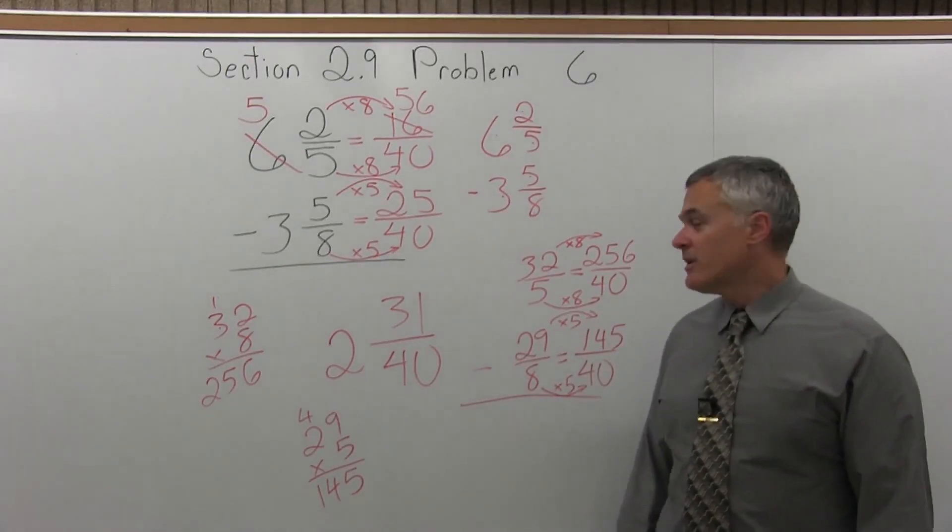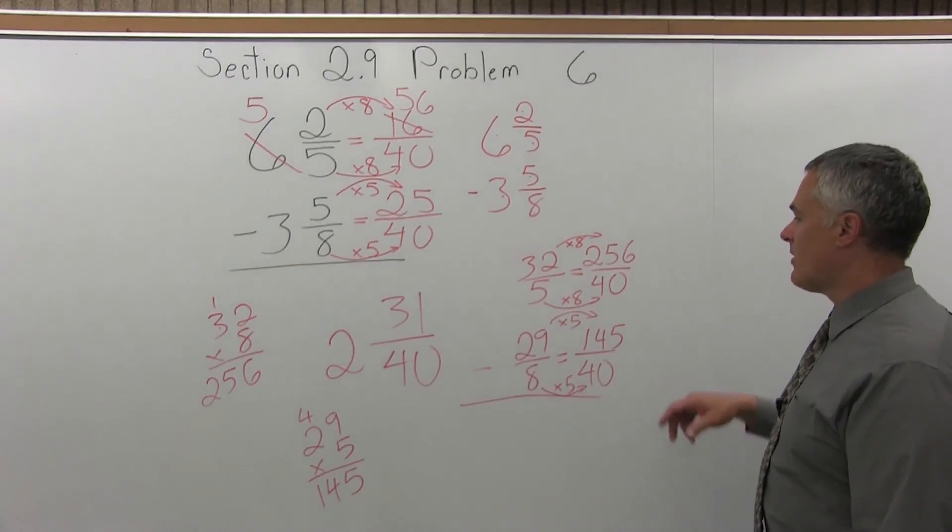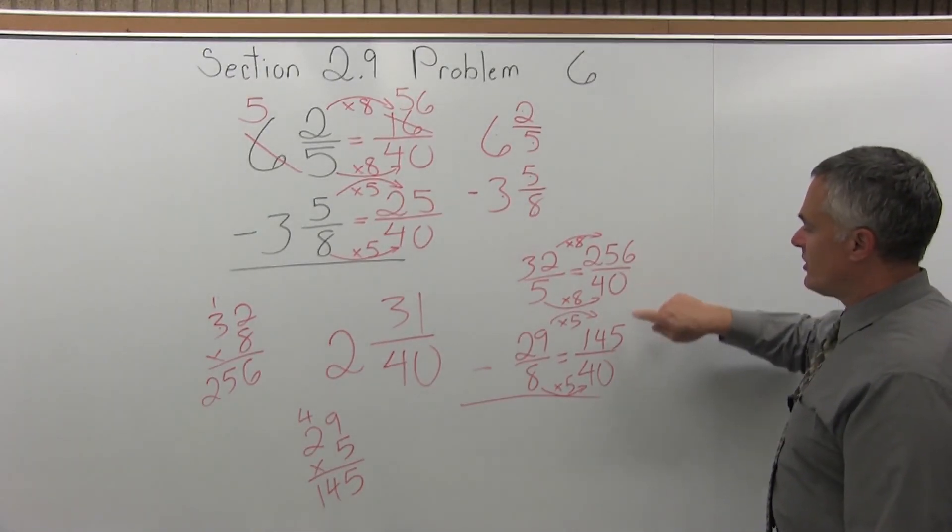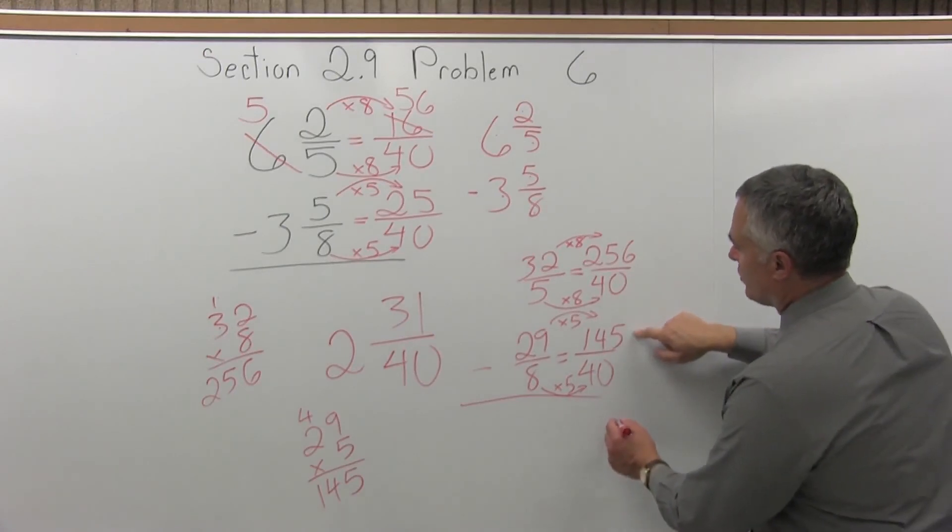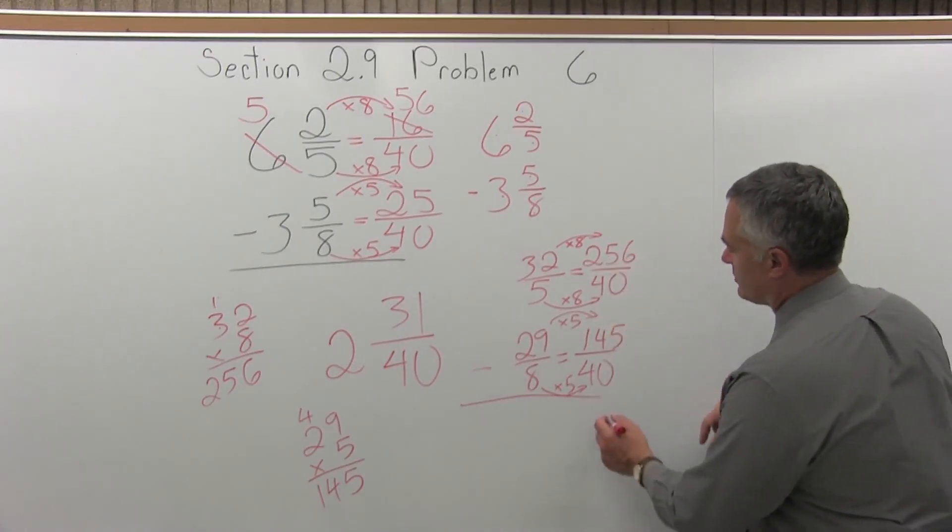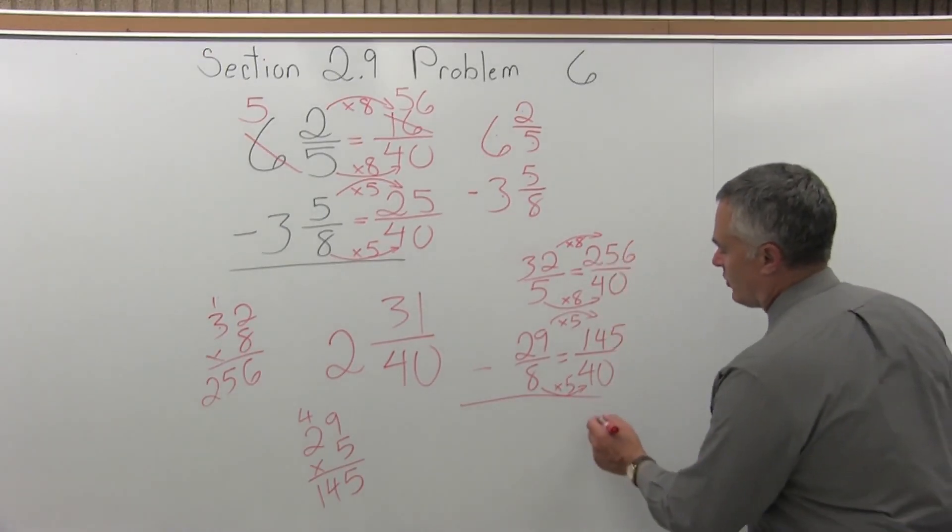Now you can subtract with no borrowing. They're bigger numbers, but no borrowing. 256 over 40 minus 145 over 40. 6 minus 5 is 1, 5 minus 4 is 1, 2 minus 1 is 1, so you have 111 over 40.